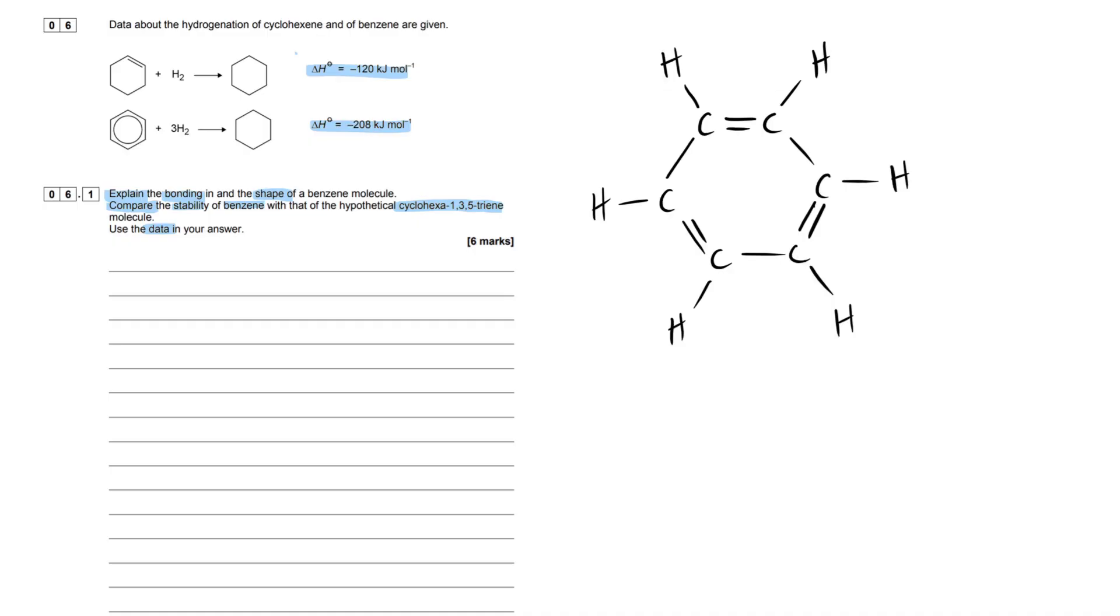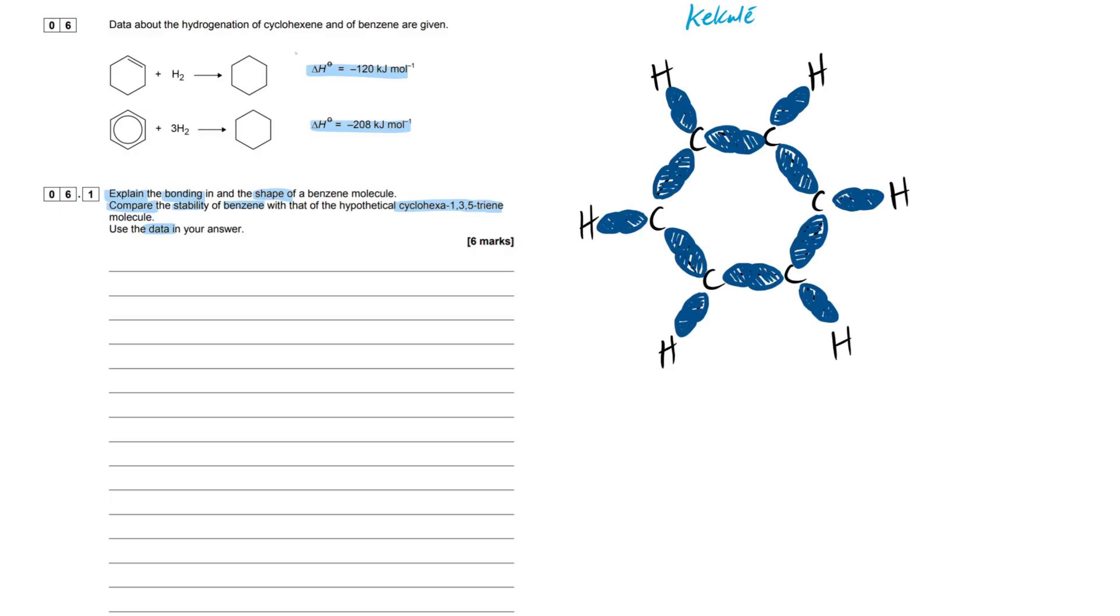I got rid of the lines to have more space to draw out the structures and give a detailed explanation. This is the Kekulé structure - cyclohexane-1,3,5-triene. I'm going to use this model to explain the structure and bonding. At A-level they do a poor job explaining p-orbital hybridization, SP2 hybridization within the benzene molecule.